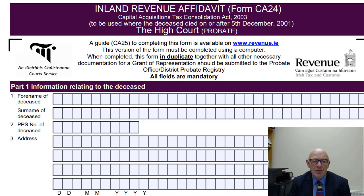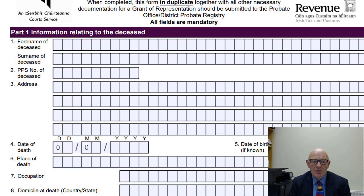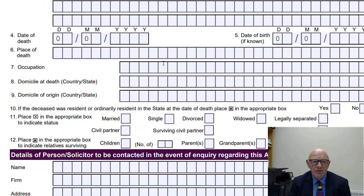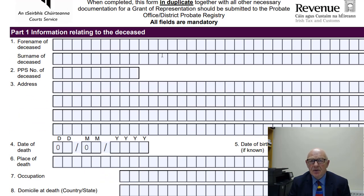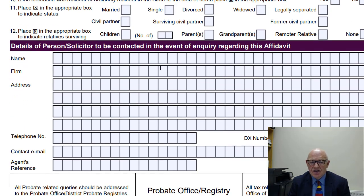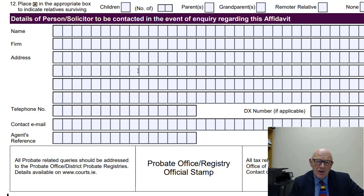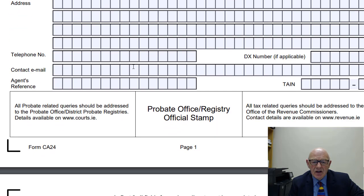The first section, Part 1 as you can see, is information relating to the deceased: name, PPS number, address, date of death, date of birth if known, and other personal information. Then you have details of the person or the solicitor to be contacted in the event of any inquiry. If you're doing it yourself, your details go in here. If a solicitor is doing it for you, then obviously the solicitor fills in those details.